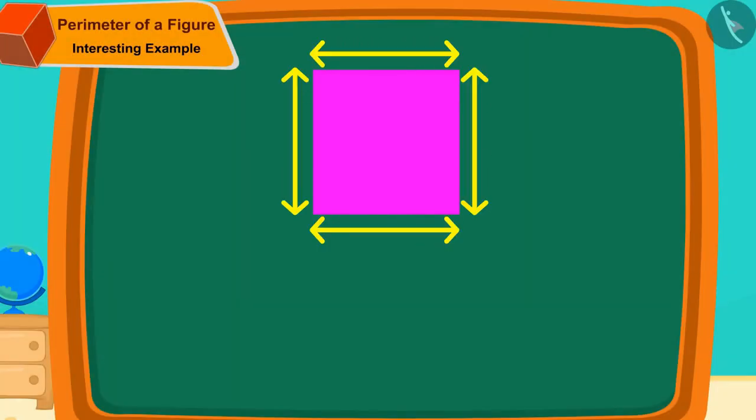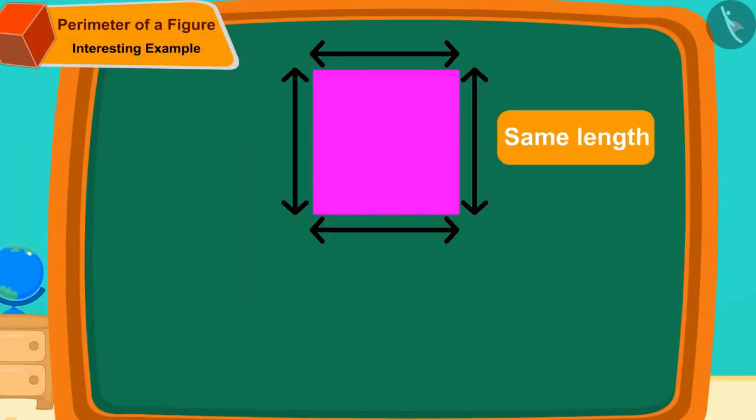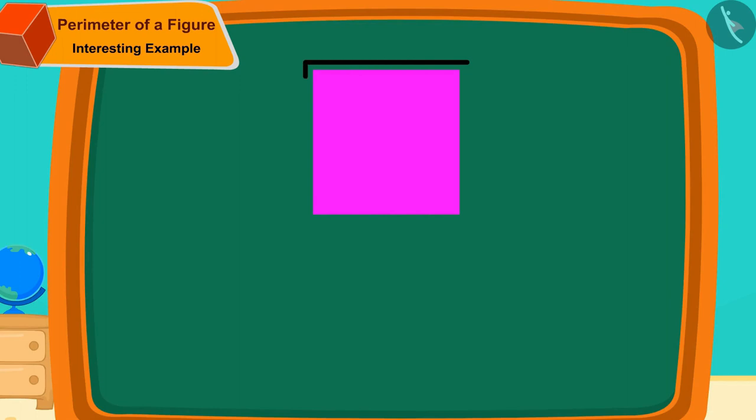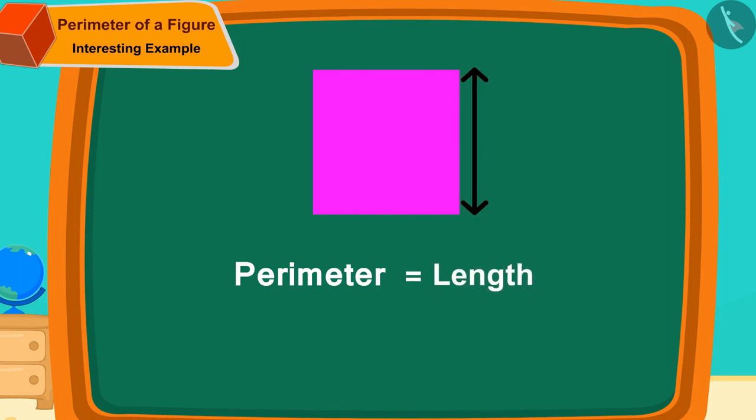All sides of the square are of the same length. So to find the perimeter of a square shape, we can simply multiply the length of any one of its edges by 4.